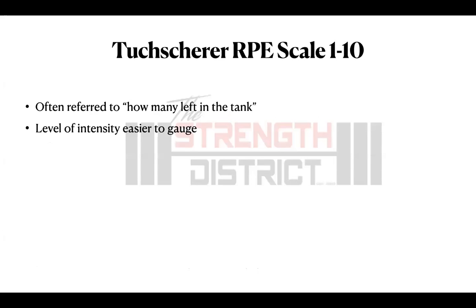If you're doing strictly strength training or hypertrophy, you'll use the Tuchsur modified RPE scale. This modified RPE scale is often referred to as 'how many reps you have left in the tank.' The difference between how many reps you have left versus the RPE equals how many reps remain. For example, doing a four-by-eight set and at the eighth rep you feel you have two more left — that's 10 minus 2, giving you an RPE of 8.